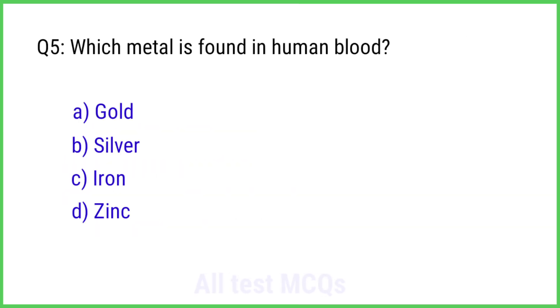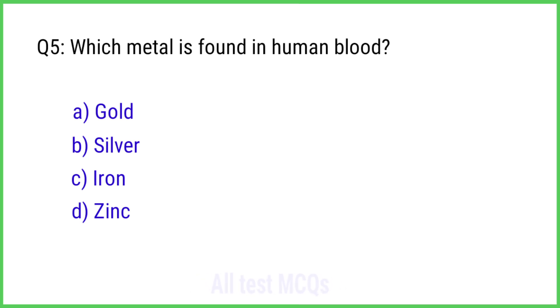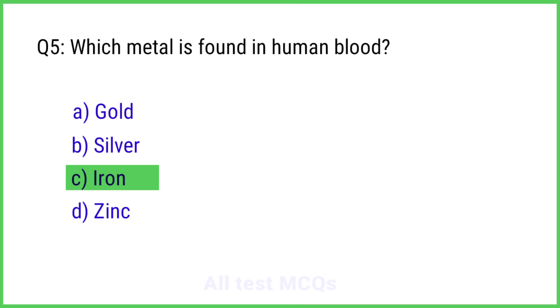Question No. 5. Which metal is found in human blood? The right answer is Option C: Iron.